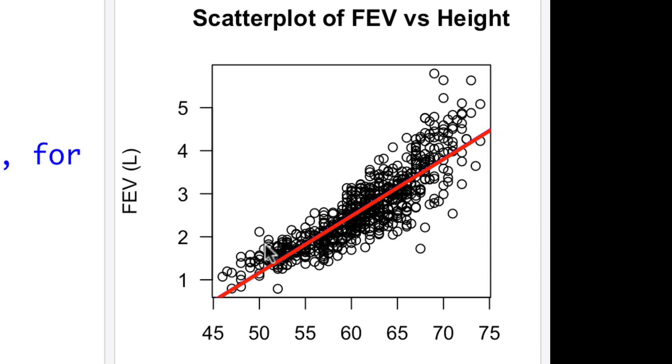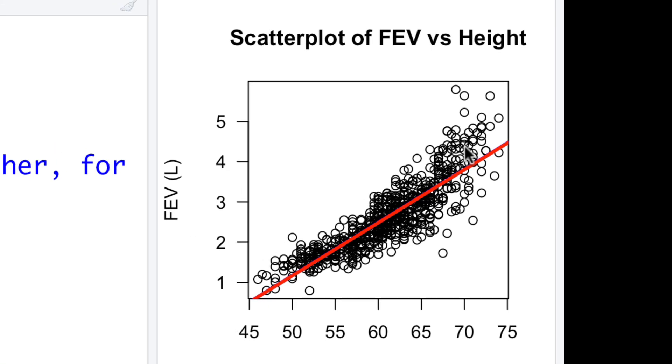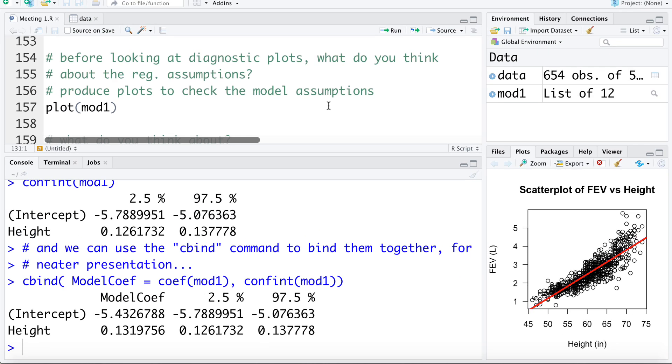If we see down here, there's not that much variability. Up here there's a lot more variability. So it looks like variation is increasing as we progress up the regression line. Now let's look at plots to check those assumptions.